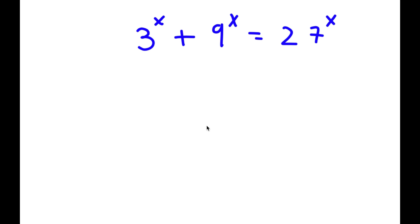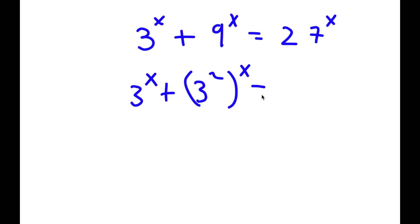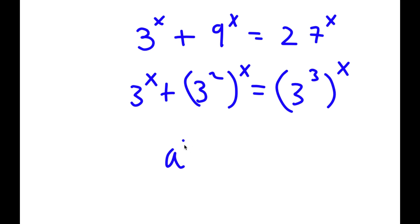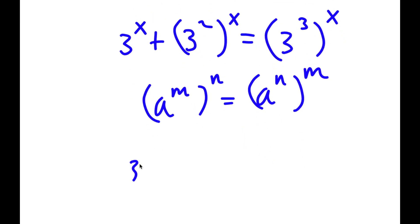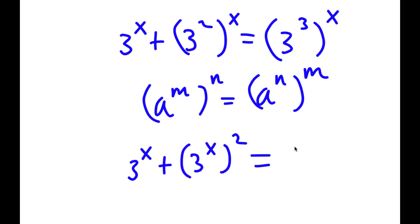In this problem, I have 3 to the power of x plus 9 to the power of x is equal to 27 to the power of x. To solve this, I'm going to first rewrite 9 to the power of x as 3 squared to the power of x, and 27 to the power of x as 3 to the power of 3, to the power of x. Using the rule that a to the power of m to the power of n equals a to the power of n to the power of m, I can rewrite these as 3 to the power of x plus 3 to the power of 2x is equal to 3 to the power of 3x.